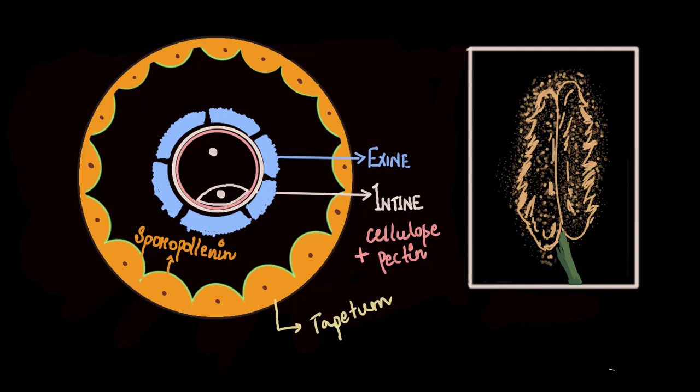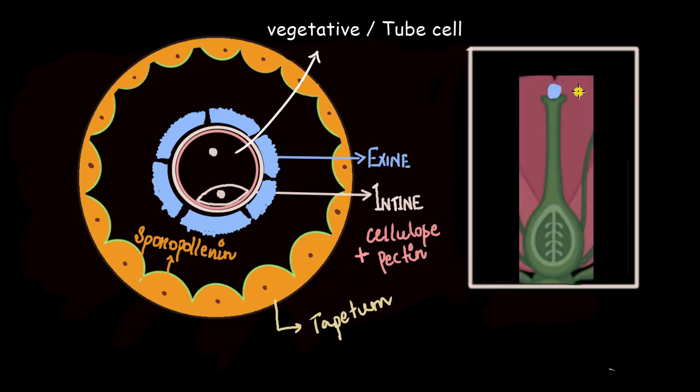This large cell is now called the vegetative or the tube cell. Can you guess why we call it a tube cell? Well, this is because this cell gives rise to what we call a pollen tube.